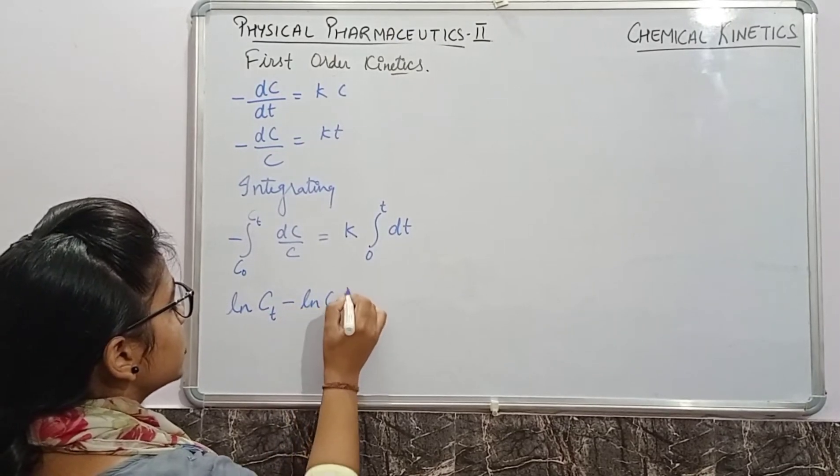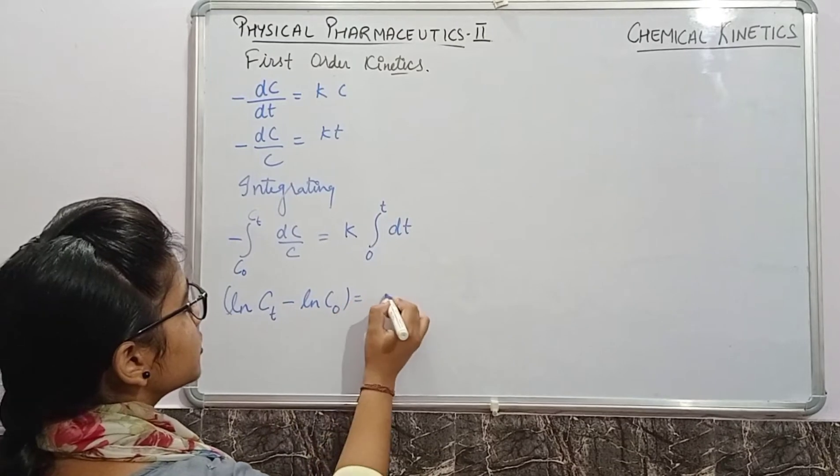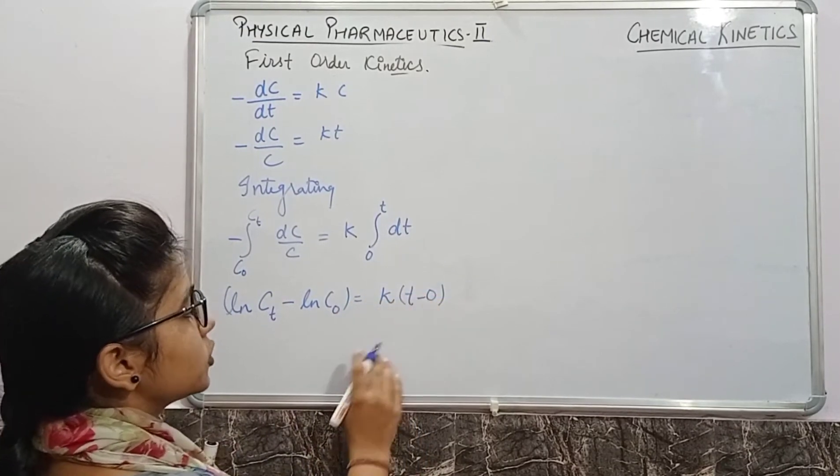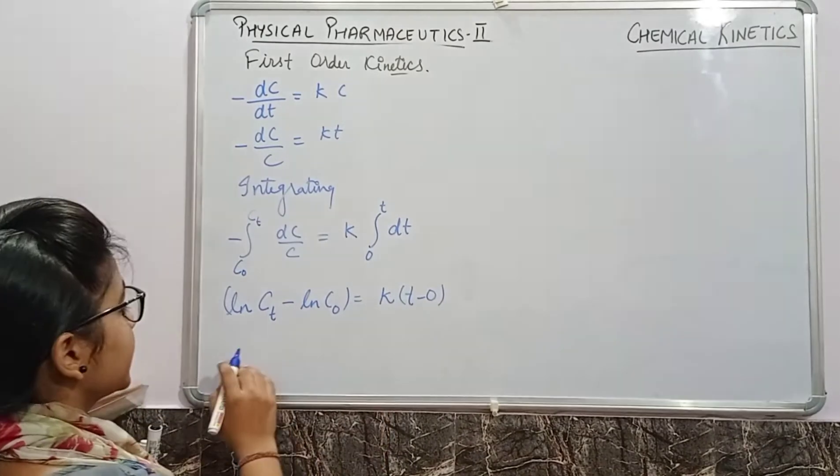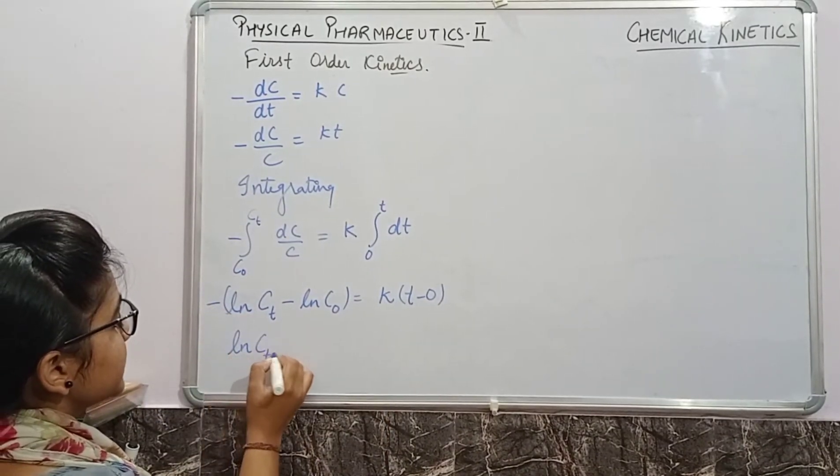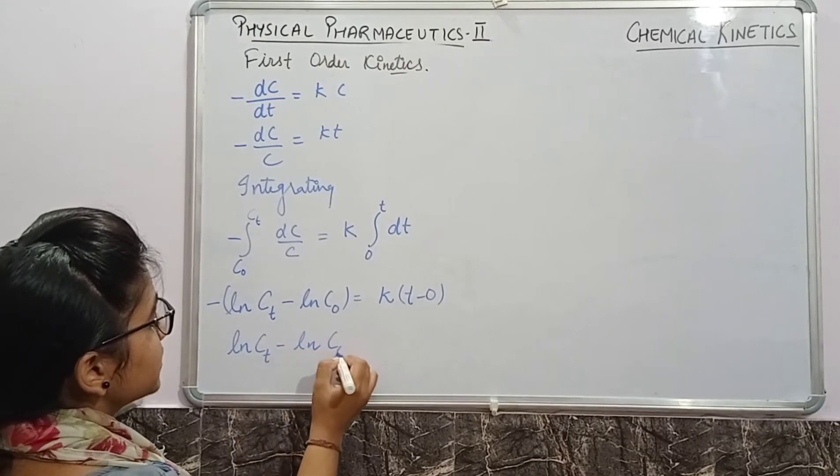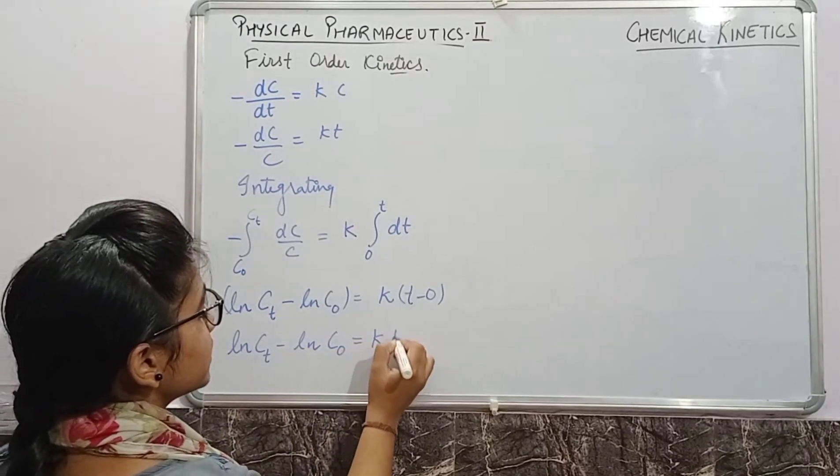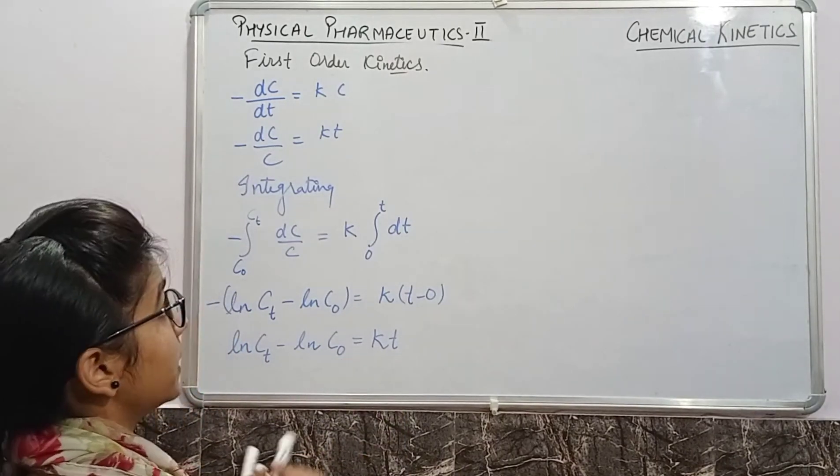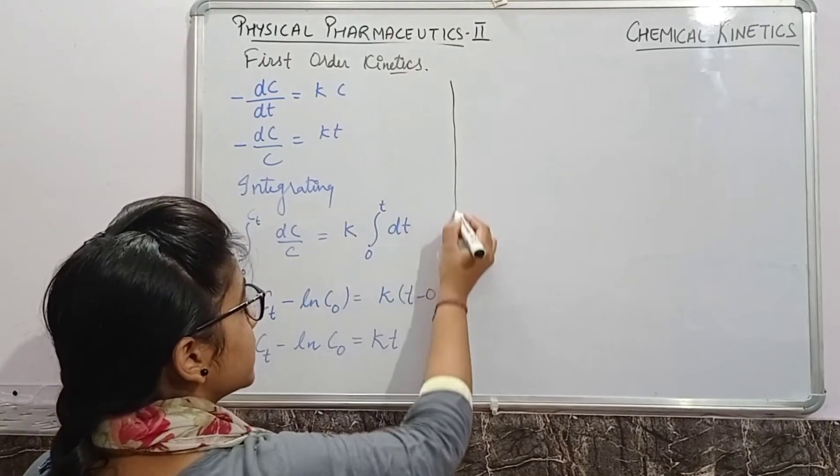When we integrate and put the natural log value, it will become ln(ct) minus ln(c naught) equals k times t minus zero. Because of the negative sign here, it will become ln(ct) minus ln(c naught) equals kt. This will be the equation which will be obtained by us.